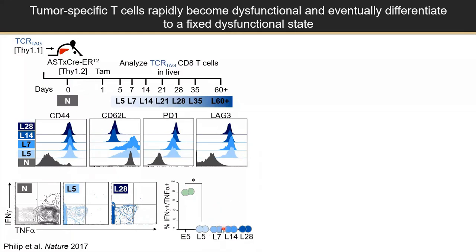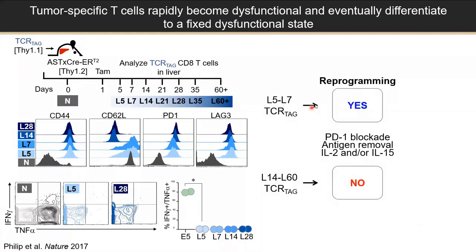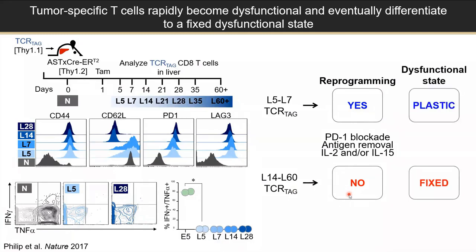We then asked whether this was a stable state that could be rescued. We took T-cells out at different time points and cultured them in vitro with IL-15. If taken out at an early time point, they regained the ability to make effector cytokines — we call these rescued T-cells. But once we waited to 12 days or beyond in the original host, after reculturing them in vitro, we were unable to rescue them despite trying several methods. This led us to characterize two distinct dysfunctional states: a plastic dysfunctional state that can be reprogrammed, and a fixed dysfunctional state in which the T-cells remain dysfunctional even when removed from the tumor context.